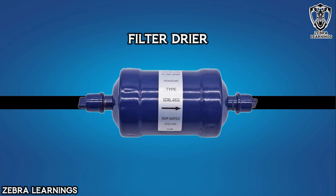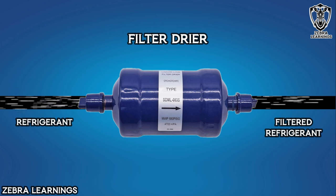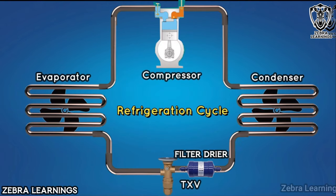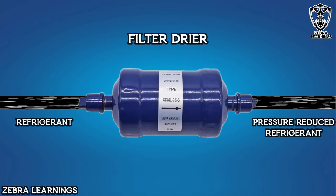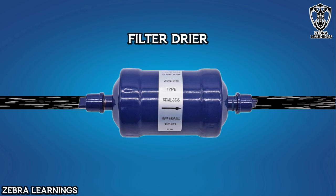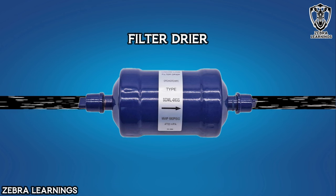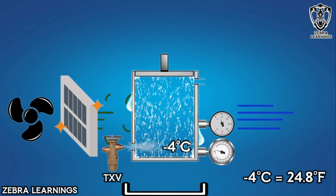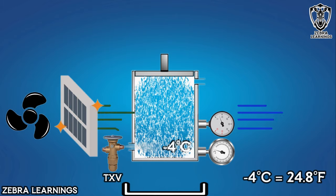Finally, the filter dryer can also be a cause of this problem. The important job of the filter dryer is to filter the refrigerant flowing in the AC unit. This filter dryer is located between the condenser and the expansion valve. If the filter dryer is blocked, the refrigerant passing through it will not be able to escape completely, but only a small amount will escape. Due to this, the refrigerant goes to the evaporator coil in less amount. So, the pressure of the refrigerant decreases and the temperature in the evaporator coil goes to freezing point.